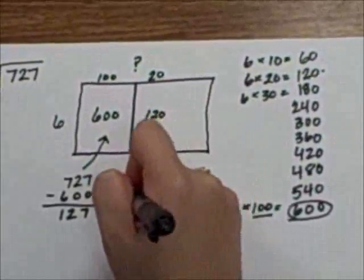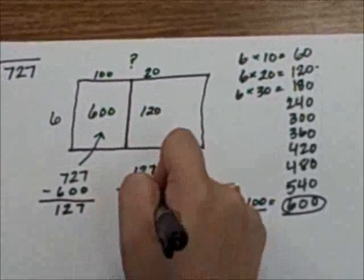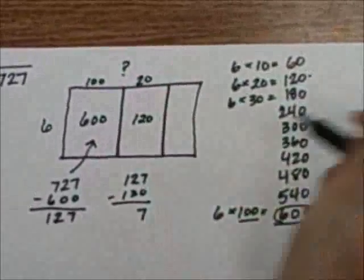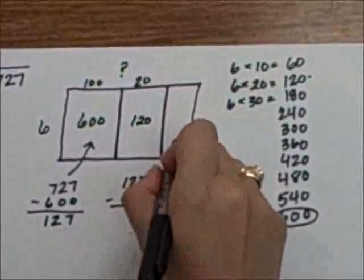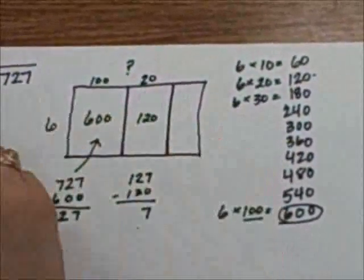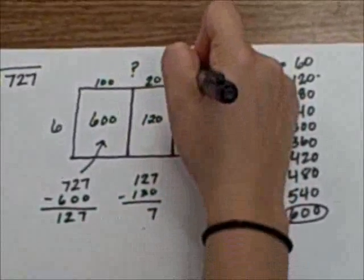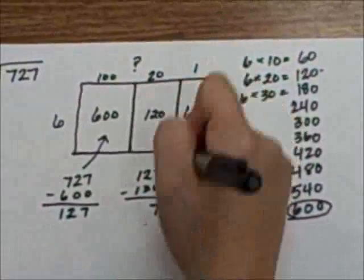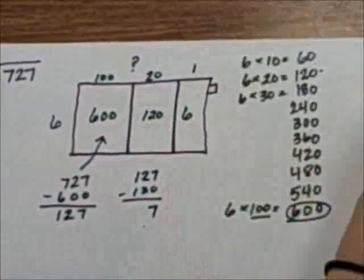If I subtract 120 from 127, I have 7 left. I'm not done yet, because I still have 7 more to put inside. I'm counting by 6's, so I can do 1 times 6 is 6, which gives me 1 remainder.